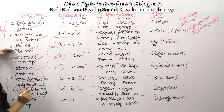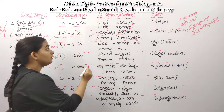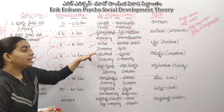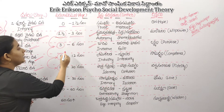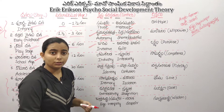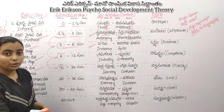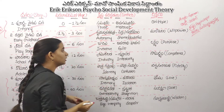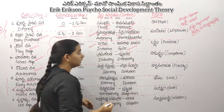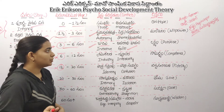Next is Initiative vs. Guilt. This is the stage where we try to do things. If you choose this age and try to get involved, the person should try. If you try but are stopped, it becomes a guilty feeling. If it goes well, it is a good feeling.